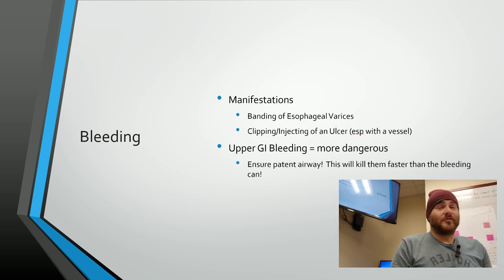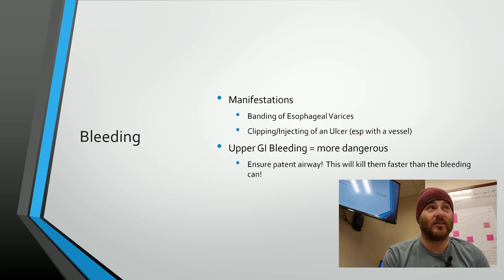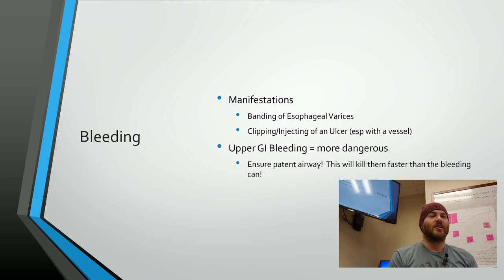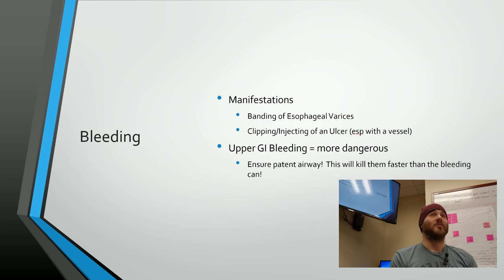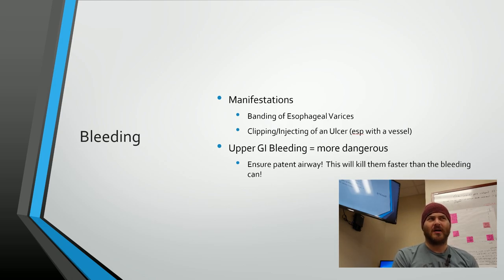Bleeding in endoscopy is common and usually not a big deal — until it is. Significant bleeding can come from esophageal varices where banding goes wrong and a high-pressure vessel ruptures, stomach ulcers with associated vessels, or lower GI issues like cancers. The most significant bleeding comes from upper scopes.